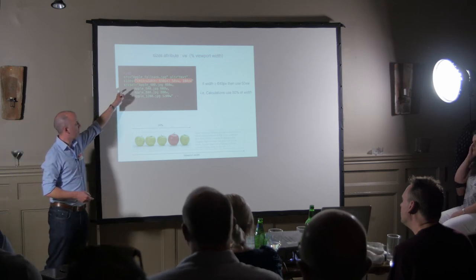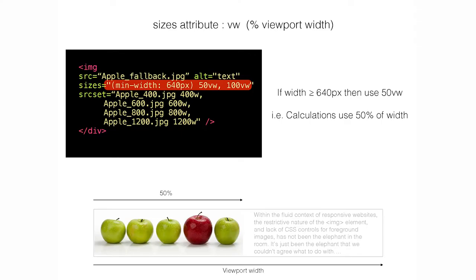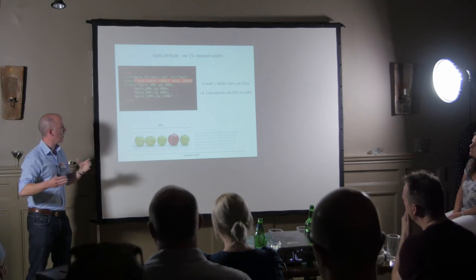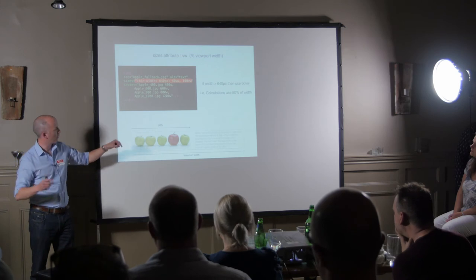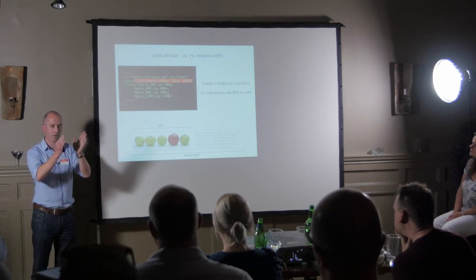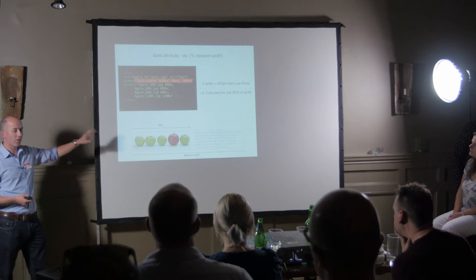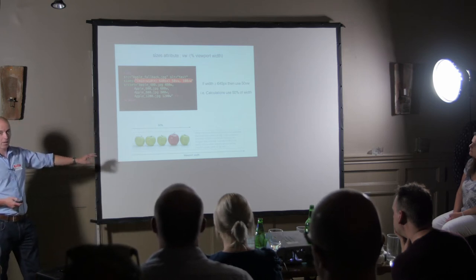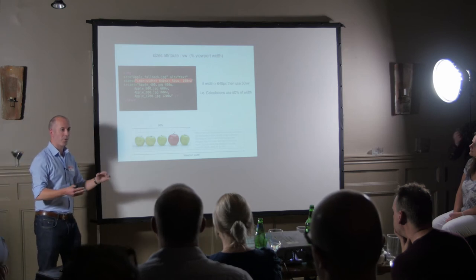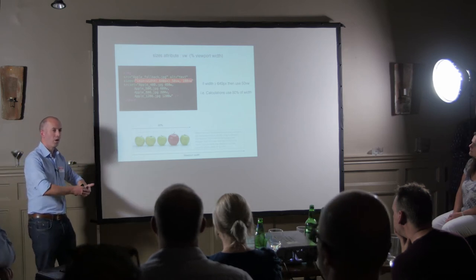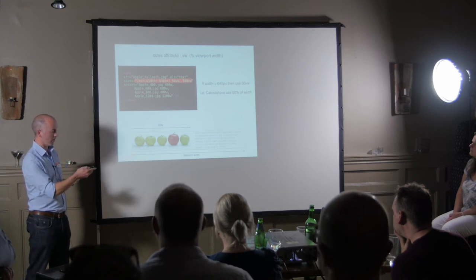The sizes attribute is where, especially if you're a hands-on front-end developer, you're not going to love it — because this is where you have to put layout information inside your markup. The 'vw' value represents the percentage of the overall page that the image takes up. So we're saying it takes up half the page, but when I'm below 640 pixels it becomes a single column — that sort of thing. From a DRY perspective purists will hate it, but you have to instruct the preloader about what space will be filled and which image to fetch.